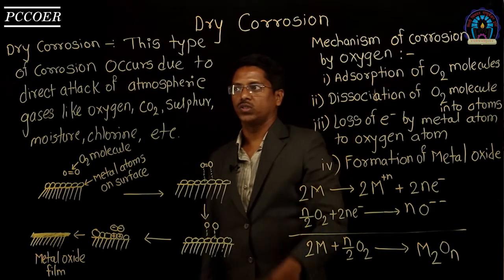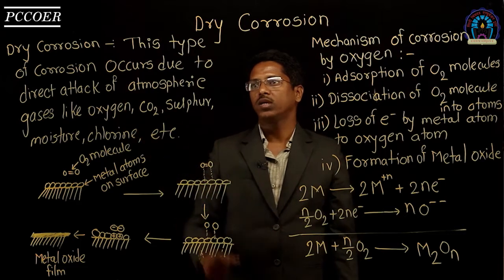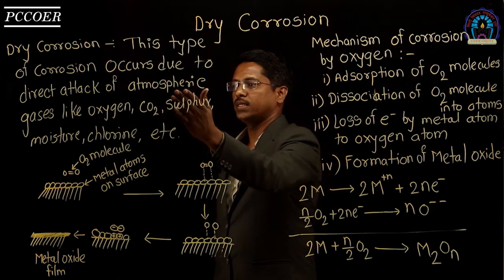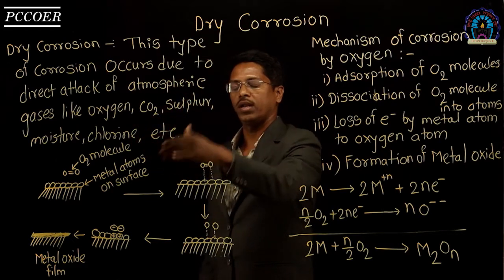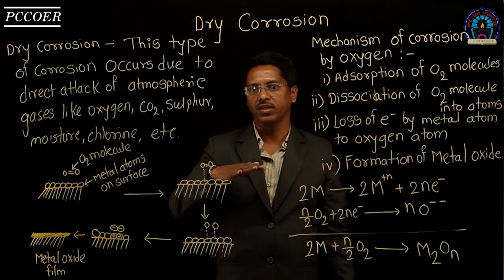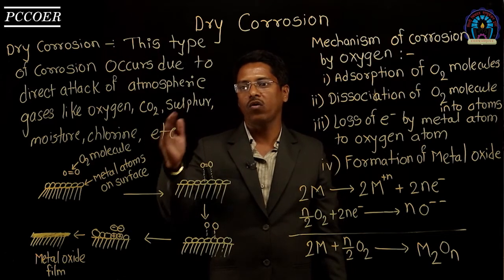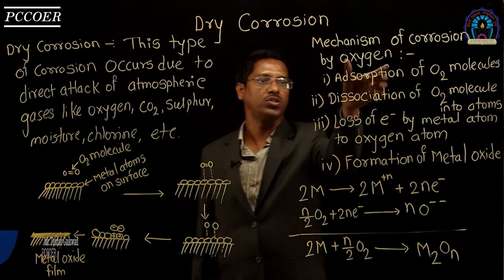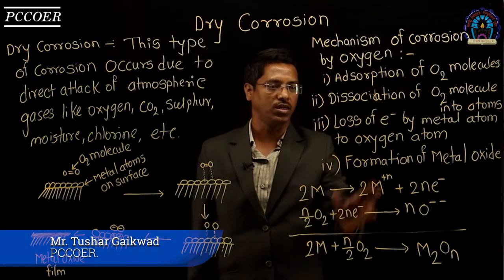Let us discuss dry corrosion. Dry corrosion takes place due to the direct attack of atmospheric gases like oxygen, carbon dioxide, sulfur, moisture, chlorine, and many other gases. When these gases attack the metal surface, corrosion takes place. We will see how the direct attack of gases takes place with the example of oxygen — specifically, the mechanism of corrosion by oxygen.